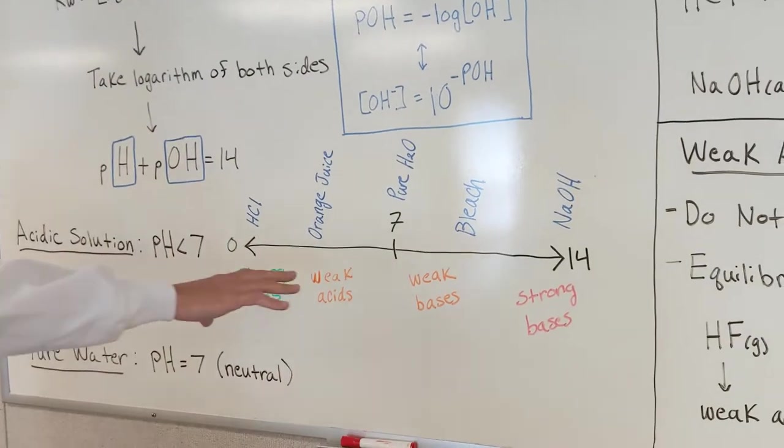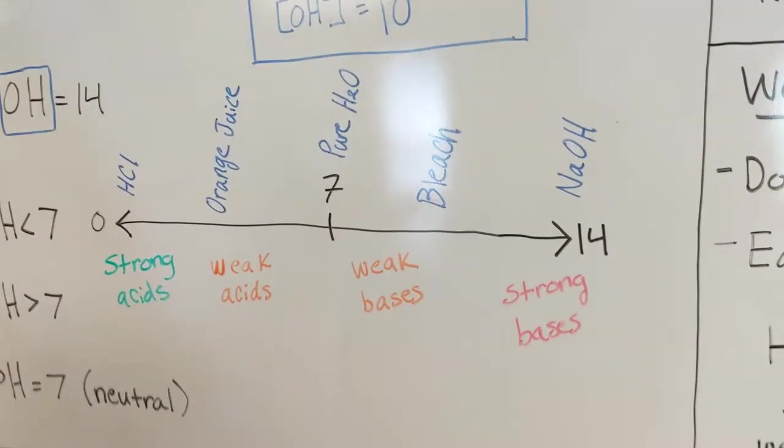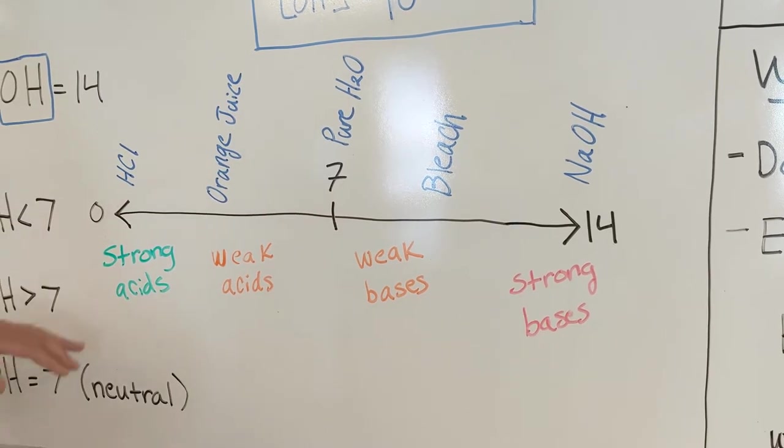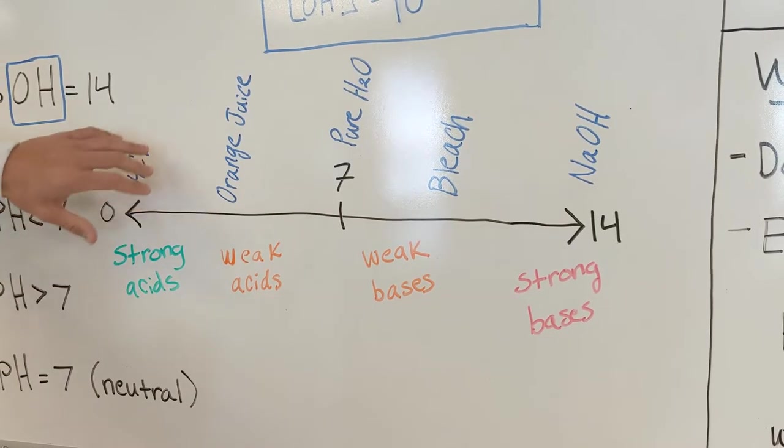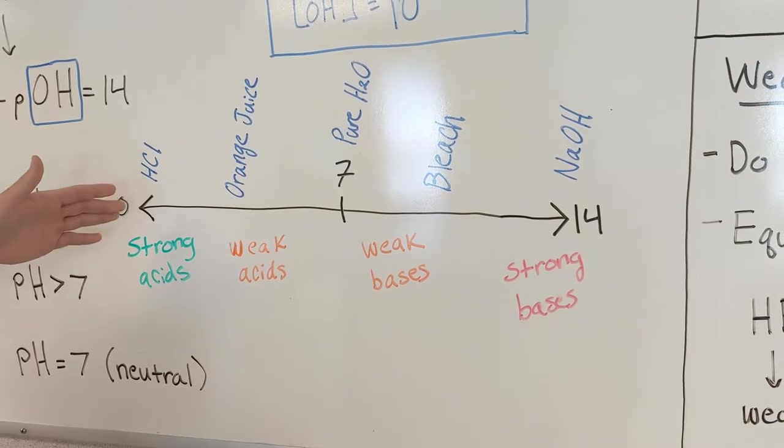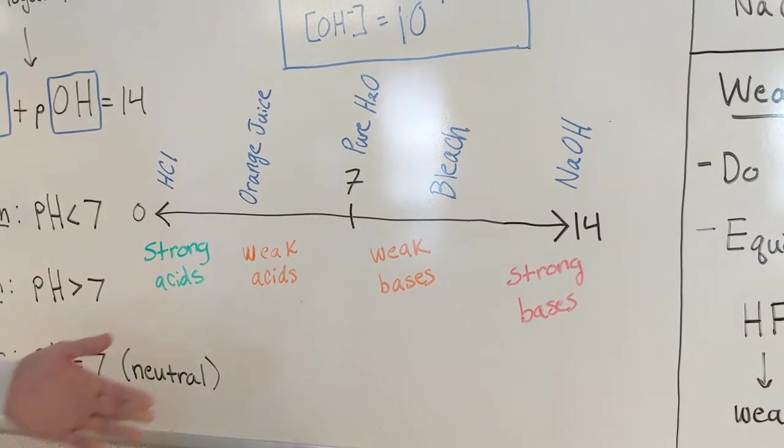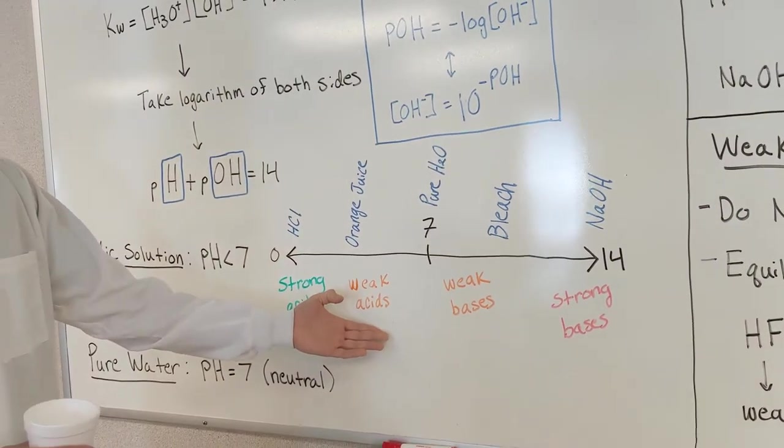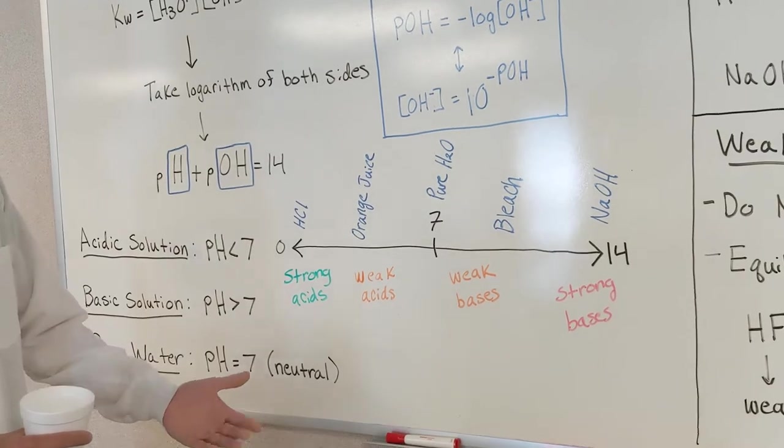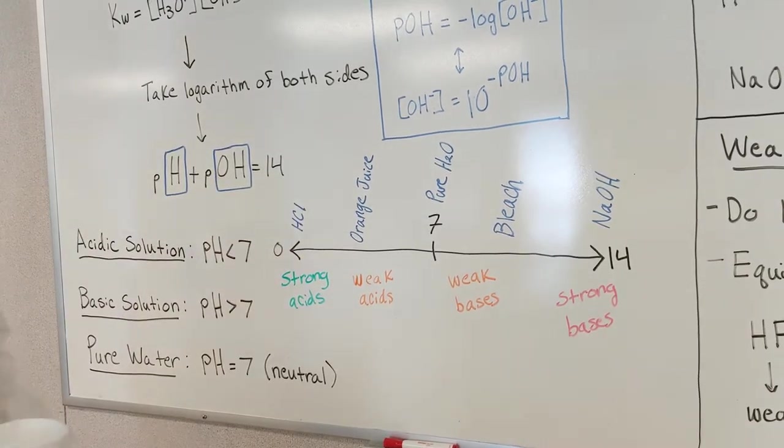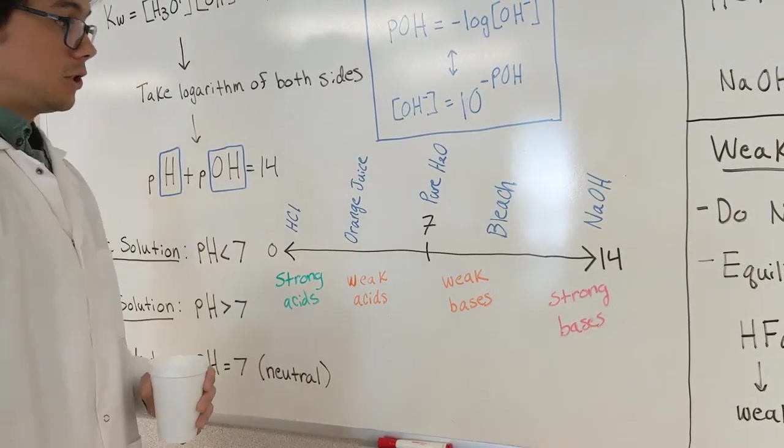Over here, we have a little scale. There are extents to how acidic and basic things can be. So, a strong acid is going to be around 0 to 1 in this range. We have HCl as one of our strong acids. And as we start moving up closer to 7, you get into weak acids. Orange juice would be an example of that. Again, we got pure H2O here at 7.